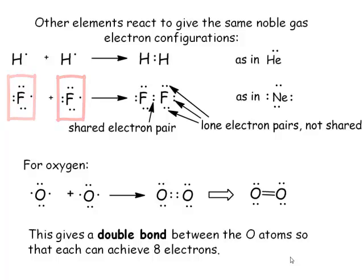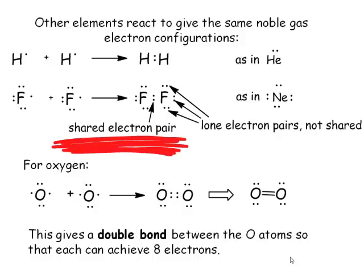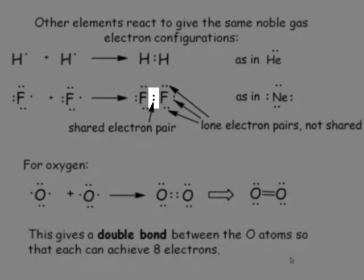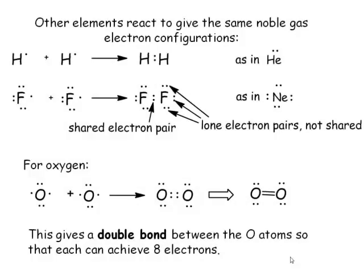Lewis theory tells us that we want to achieve an eight-electron valence configuration — an octet of electrons — and we can do that by sharing electrons to make pairs. You share those two odd electrons, making a bonding pair, and now if you count the number of electrons around each fluorine atom, it adds up to eight. There's a bonding pair here, but there are still three lone pairs around the fluorine, and this can become important later when we're predicting the structure of molecules.